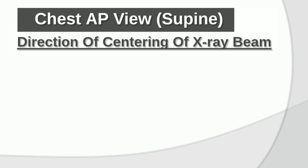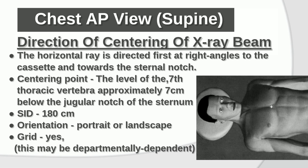Direction of centering of X-ray beam: The horizontal ray is directed at right angles to the cassette and towards the sternal notch. Centering point: the level of the 7th thoracic vertebra, approximately 7 cm below the jugular notch of the sternum. SID: 180 cm. Orientation: portrait or landscape. Grid: yes — this may be departmentally dependent. Always use a grid to enhance image quality.